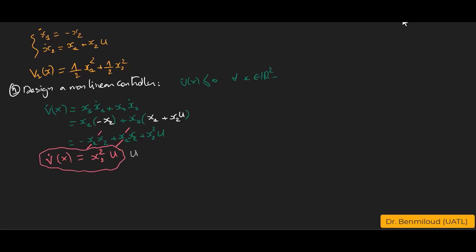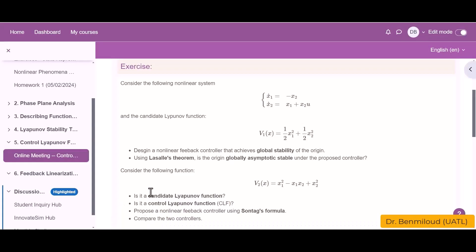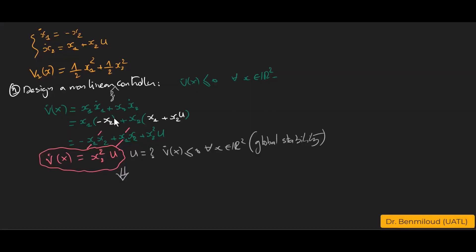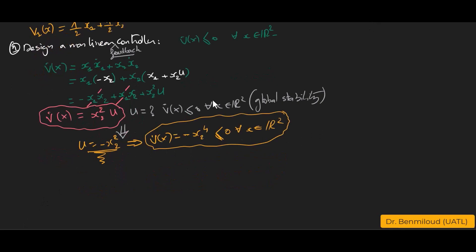We need an expression for u that makes V̇(x) ≤ 0 for all x ∈ ℝ². One could choose u = -1, giving V̇(x) = -x₂², which achieves global stability. However, the question asks for a nonlinear feedback controller, meaning u depends on x. So we choose u = -x₂², which gives V̇(x) = -x₂⁴ ≤ 0 for all x ∈ ℝ². Therefore u = -x₂² is a nonlinear feedback controller achieving global stability by Lyapunov's theorem.